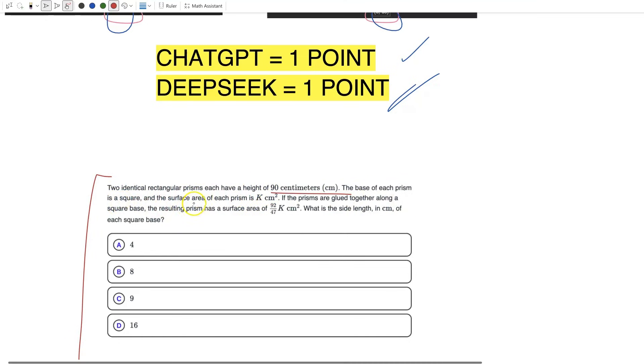The base of each prism is a square, surface area of each prism is k cm squared. If the prisms are glued together along a square base, the resulting prism has a surface area of whatever. What is the side length in cm of each square base? You can see a lot of moving parts—it's going to be interesting how these AI models handle that.